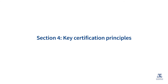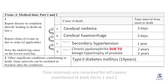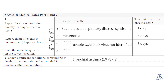Section 4: Key Certification Principles. Let's summarise some key principles in completing the cause of death section on the death certificate. Write the sequence of events leading to death in Part 1 and the contributory causes not included in this sequence in Part 2. Do not write multiple causes in a single line. Make sure that the time intervals are recorded for all causes mentioned in both Parts 1 and 2. Assuming the sequence of events is accurate, the time sequence in Part 1 will be written in an ascending order from line 1A downwards.